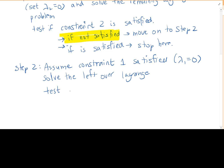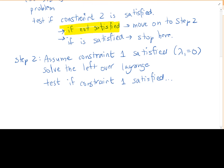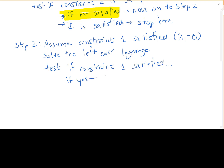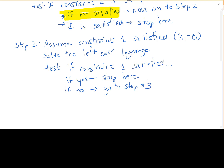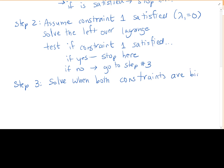Once done, test if constraint one is satisfied. If yes, stop — whatever we found is our solution. If no, go to step three, which is to solve when both constraints are what we call binding.